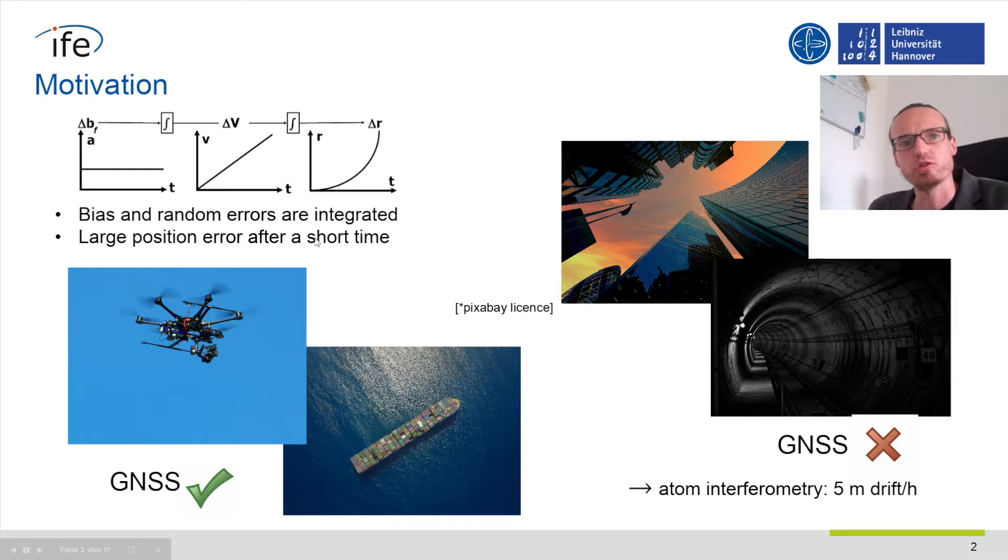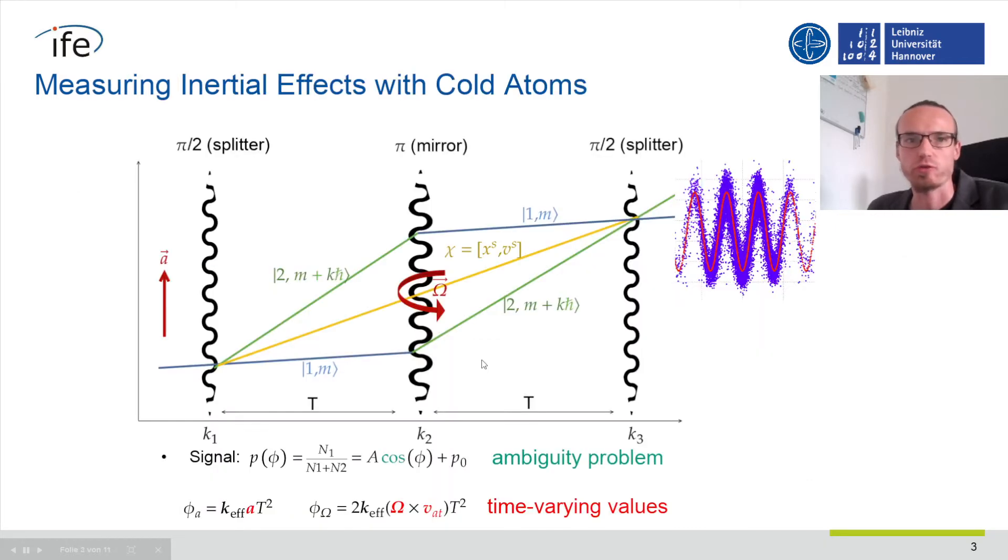In GNSS-denied environments, inertial navigation is a method of choice for high short-term accuracy of the kinematic state. But since the solution drifts fast because of integrated errors, we want to apply atom interferometry to reduce the drift and keep the advantage of an autonomous sensor system.